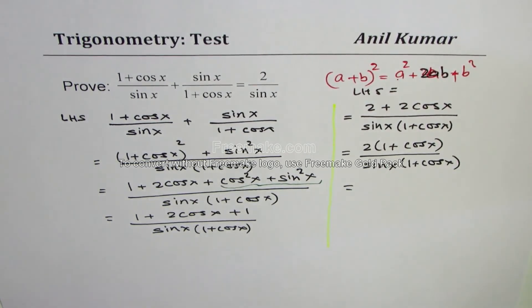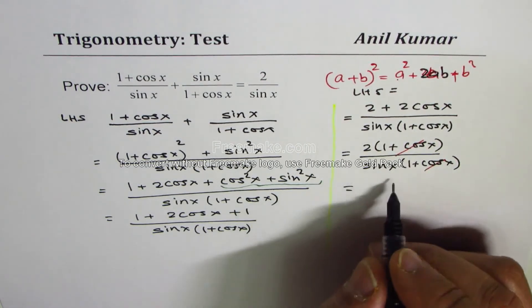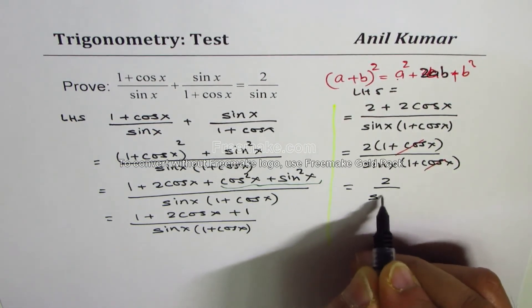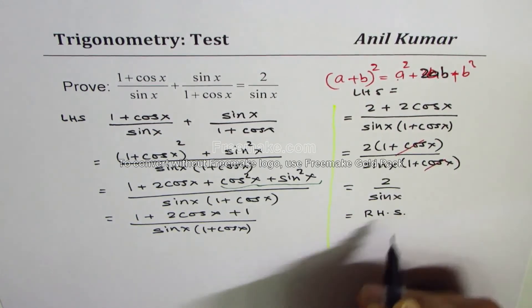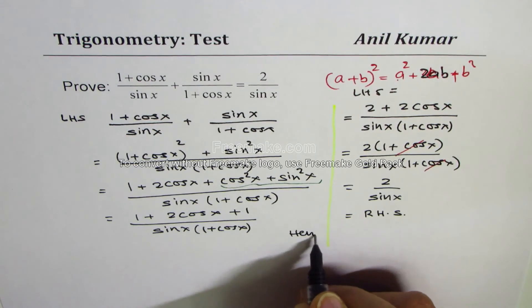And of course now we can cancel the factors (1 + cos x), getting 2 over sin x, which is the right-hand side. So we have hence proved.